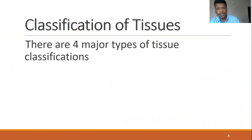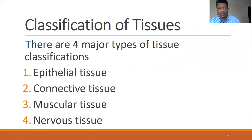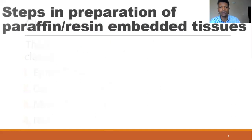Classification of tissues: these tissues are basically divided into four classes. We have the epithelial tissue, connective tissue, muscular tissue, and nervous tissue.